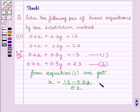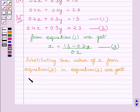Now we name this equation as 3. Now substituting the value of x from equation 3 in equation 2 we get 0.4 multiplied by 1.3 minus 0.3y upon 0.2 plus 0.5y is equal to 2.3.